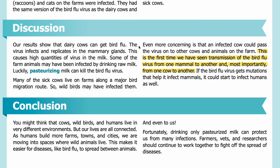Discussion: Our results show that dairy cows can get bird flu. The virus infects and replicates in the mammary glands, causing high quantities of virus in the milk. Some of the farm animals may have been infected by drinking raw milk. Luckily, pasteurizing milk can kill the bird flu virus. Many of the sick cows lived on farms along a major bird migration route, so wild birds may have infected them. Even more concerning is that an infected cow could pass the virus on to other cows and animals on the farm.